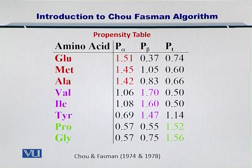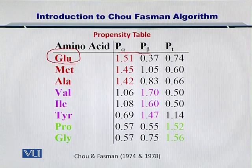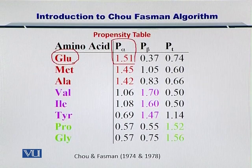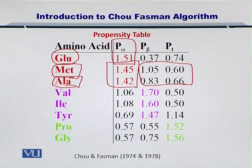As we discussed earlier, we can make a propensity table. Chou et al. actually built up this propensity table and they counted which amino acid occurs in which secondary structure and how many times. If you look at this slide, you can see glutamine and its propensities for alpha helices, beta sheets, and turns along with the values. If you want to see where glutamine may be found most probably, then by just looking at this table, you can predict that glutamine is mostly found in alpha helices. Similarly, if you look at methionine and alanine,